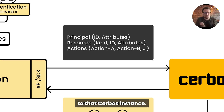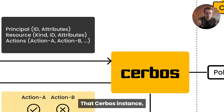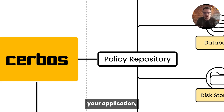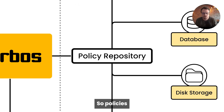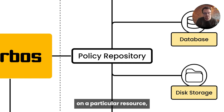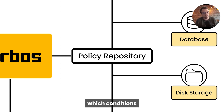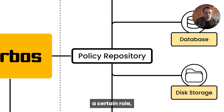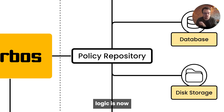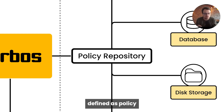So that request goes to that Cerbos instance. That Cerbos instance, running right alongside your application, has loaded into it policy. Policies define the different resource types inside of your system, the different actions that you can do on a particular resource, and then under which conditions you should be able to do those particular actions. So you must have a certain role, or you must be the owner, or you must be a part of the same team. All these kinds of authorization logic are now defined as policy rather than code.